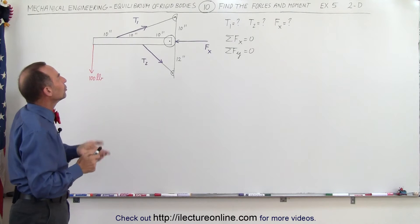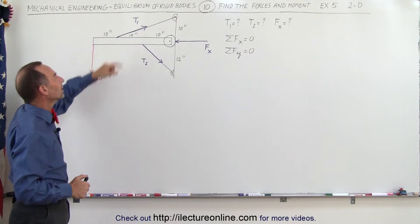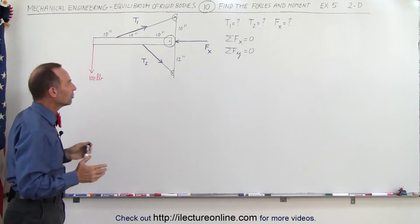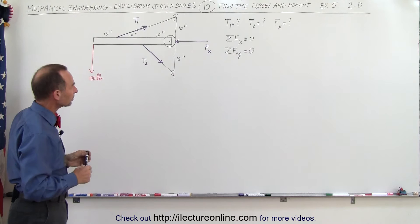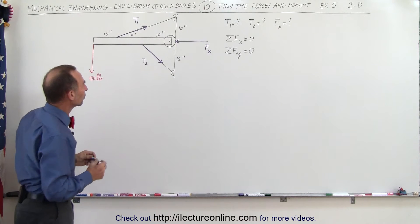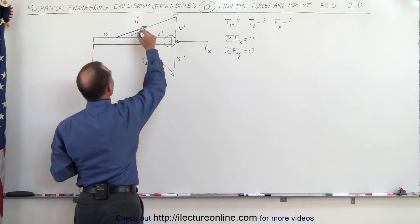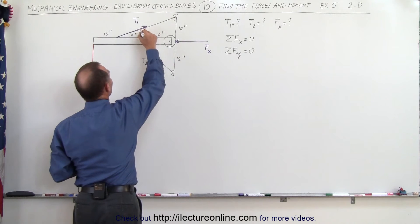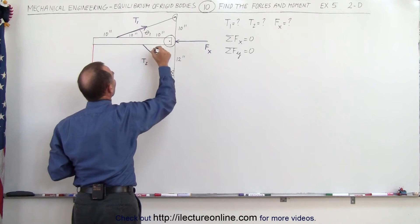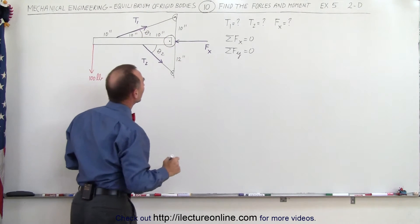To do that we need to find the vertical and horizontal components of T1 and T2. We have two angles: let's call the first one theta sub 1 and the second one theta sub 2.